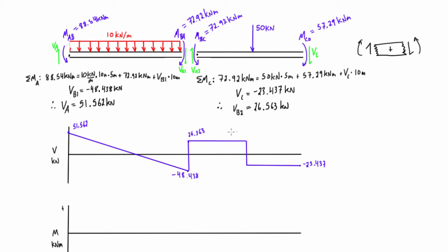When we have an applied point load on a span — just like in statically determinate problems — it causes the shear force diagram to drop by the magnitude of that applied load. At point B we have a roller support, which acts like a point load pressing up, so as we move across the diagram it jumps by the magnitude of that reaction. The difference at B corresponds to the reaction force there.